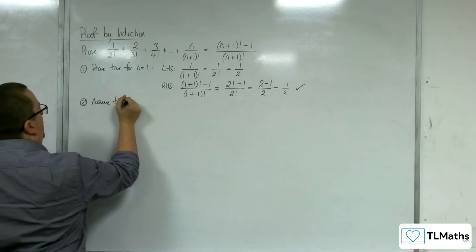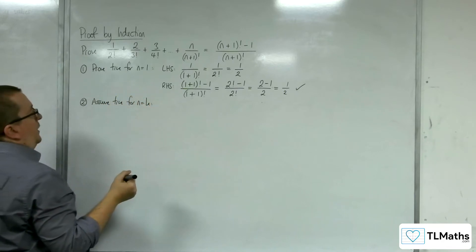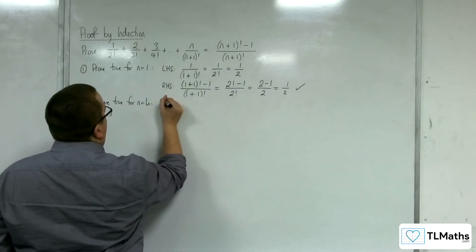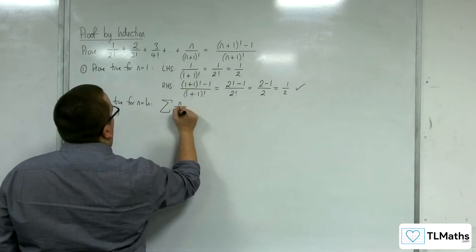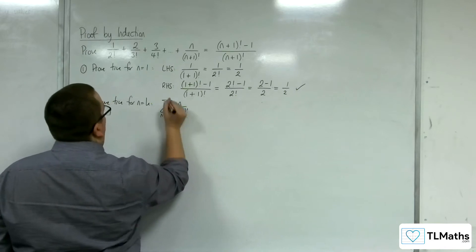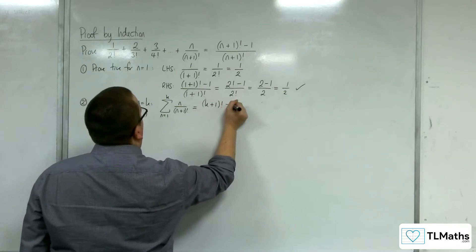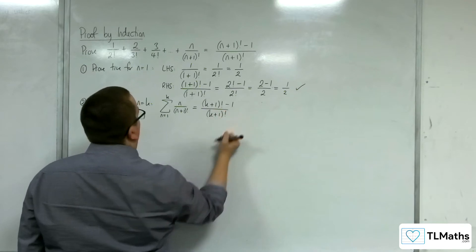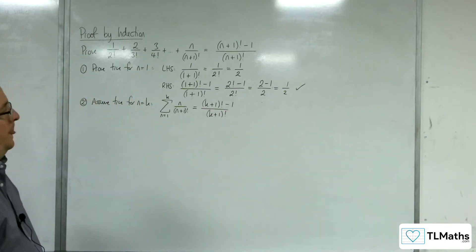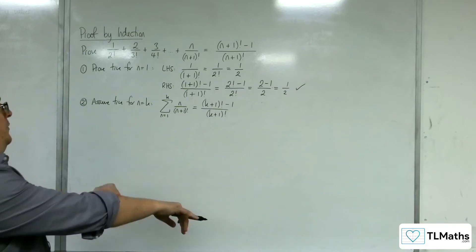Stage 2: assume that it's true for n equals k. So we'd be saying that the sum of n over n plus 1 factorial from n equals 1 up to k is equal to k plus 1 factorial take away 1 over k plus 1 factorial. That's our assumption.